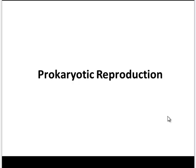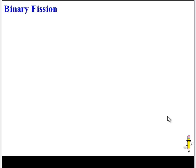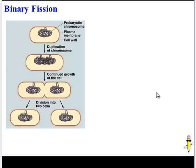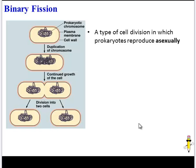So how do prokaryotes reproduce? Well, they do something called binary fission, and this is very simple. One cell — the parent — duplicates its chromosomes during DNA replication, and then splits into two identical cells. So this is an asexual form of reproduction. It's similar to mitosis, but it's not the same because prokaryotes don't have a nucleus to divide.